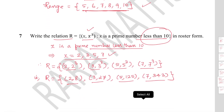Question 7: Write the relation R = {(x, x³) : x is a prime number less than 10}. The prime numbers less than 10 are 2, 3, 5, and 7. So the elements of R are: (2, 8), (3, 27), (5, 125), and (7, 343). These are all the ordered pairs in the relation.